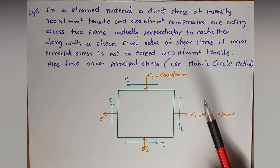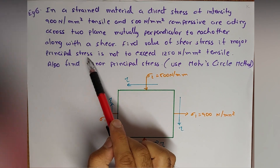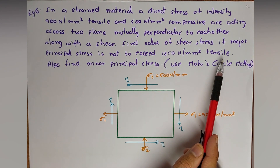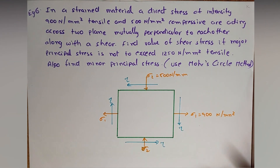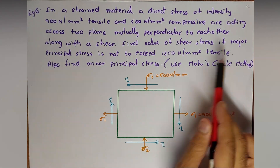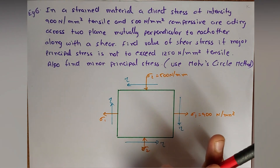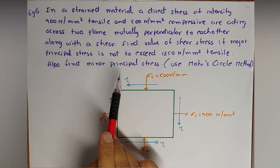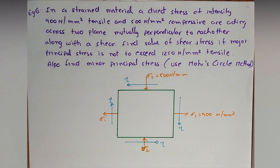Find the value of shear stress tau if the major principal stress Sigma N1 is not to exceed 1250 Newton per mm² tensile. Also find the minor principal stress. We will use Mohr circles method to solve this.